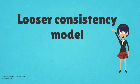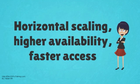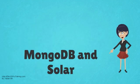For example, one record could have five fields, while the other could have seven. NoSQL provides horizontal scaling, higher availability, and faster access. Popular NoSQL databases are MongoDB and Solr.